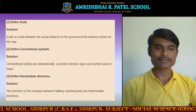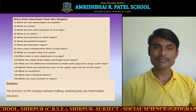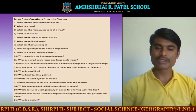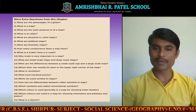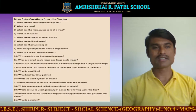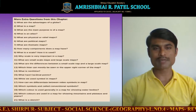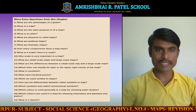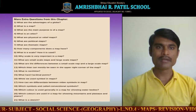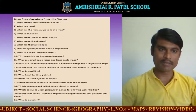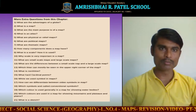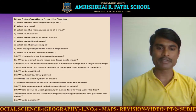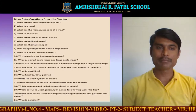Now there are some extra questions from this chapter. You have to find the answers by looking into your textbook. Questions include: what are the advantages of a globe? What is a map? What are the main parts of the globe? What is an atlas? What are physical maps and relief maps?